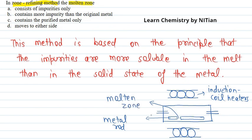Basically, what happens is the molten zone moves ahead with the heaters. The pure metal is made into crystals, and the impurities move ahead with the molten zone. This method is very useful for producing semiconductors or other metals requiring very high purity, such as germanium, silicon, boron, etc.